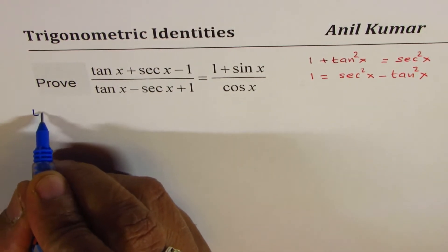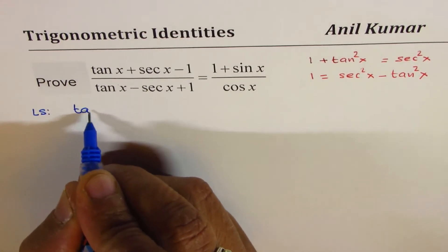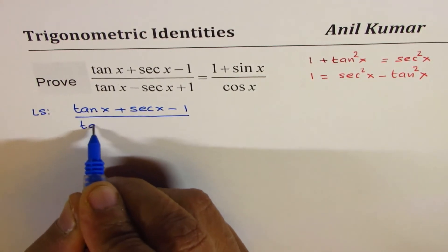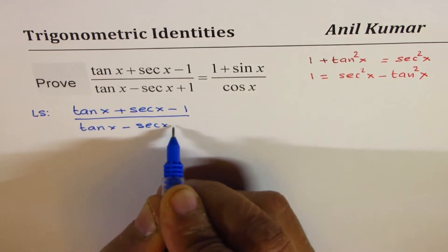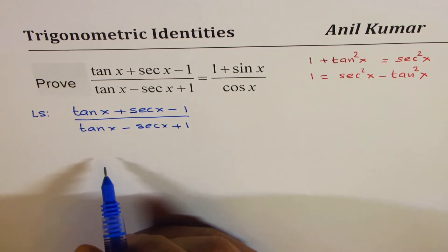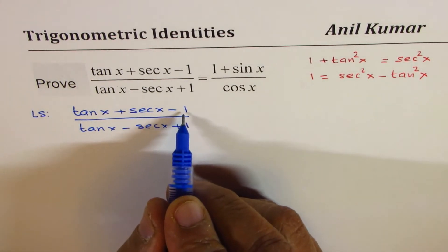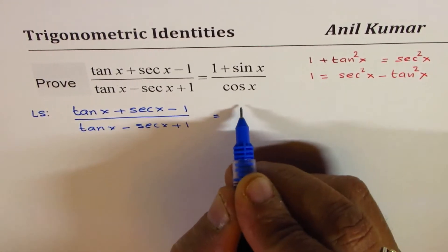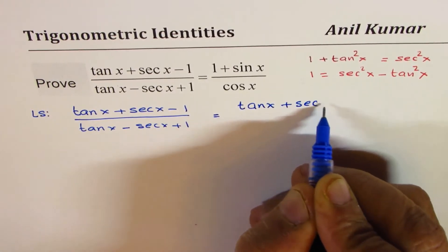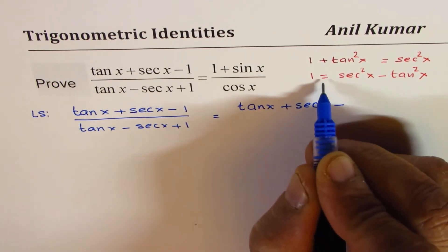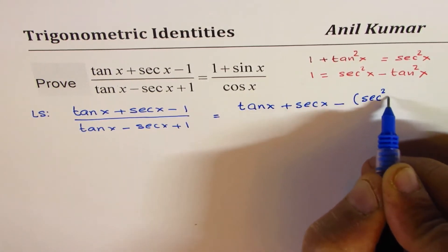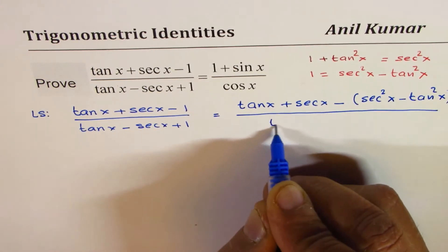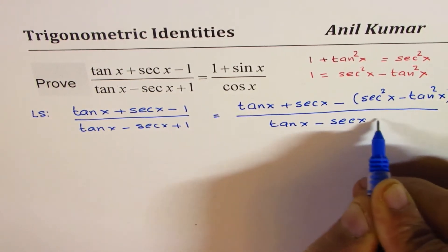So we will begin with the left side. Left side is tan x plus secant x minus 1 divided by tan x minus secant x plus 1. If I replace minus 1 from the numerator by secant square x minus tan square x, let's see what we get. So we get tan x plus secant x minus, instead of 1 I am writing secant square x minus tan square x, and the denominator we will keep the same, which is tan x minus secant x plus 1.